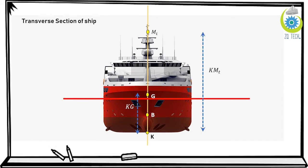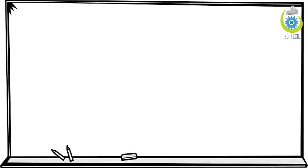This is the transverse section of the ship, and you can see the same points but the section is different. KMT is basically the distance from the keel to the transverse metacenter, while KG is the distance from the keel to the center of gravity, and similarly the other distances like KB, KG, and GM.